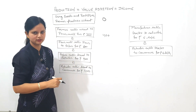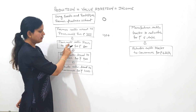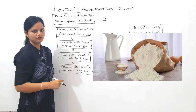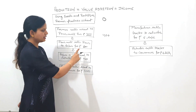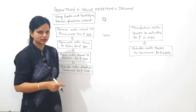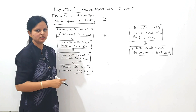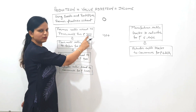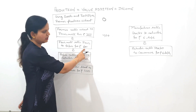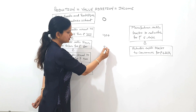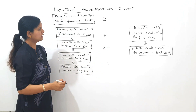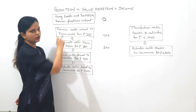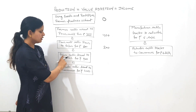The flour mill converts the wheat into flour and sells it to the baker for ₹600. He purchased it for ₹400 but sells it for ₹600 because he converted wheat into the more useful product flour. That's why he has done value addition of ₹200 — we can say he has earned ₹200 and done production of ₹200.